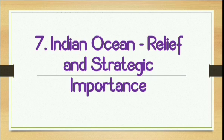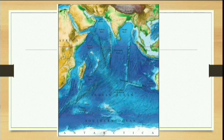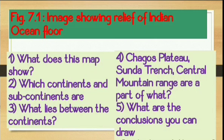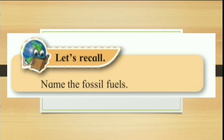Now we will go to Chapter 7: Indian Ocean Relief and Strategic Importance. In this chapter, there is a map with a questionnaire based on it which has been eliminated. These are questions based on that particular map. Then you have to name some fossil fuels — that is eliminated.